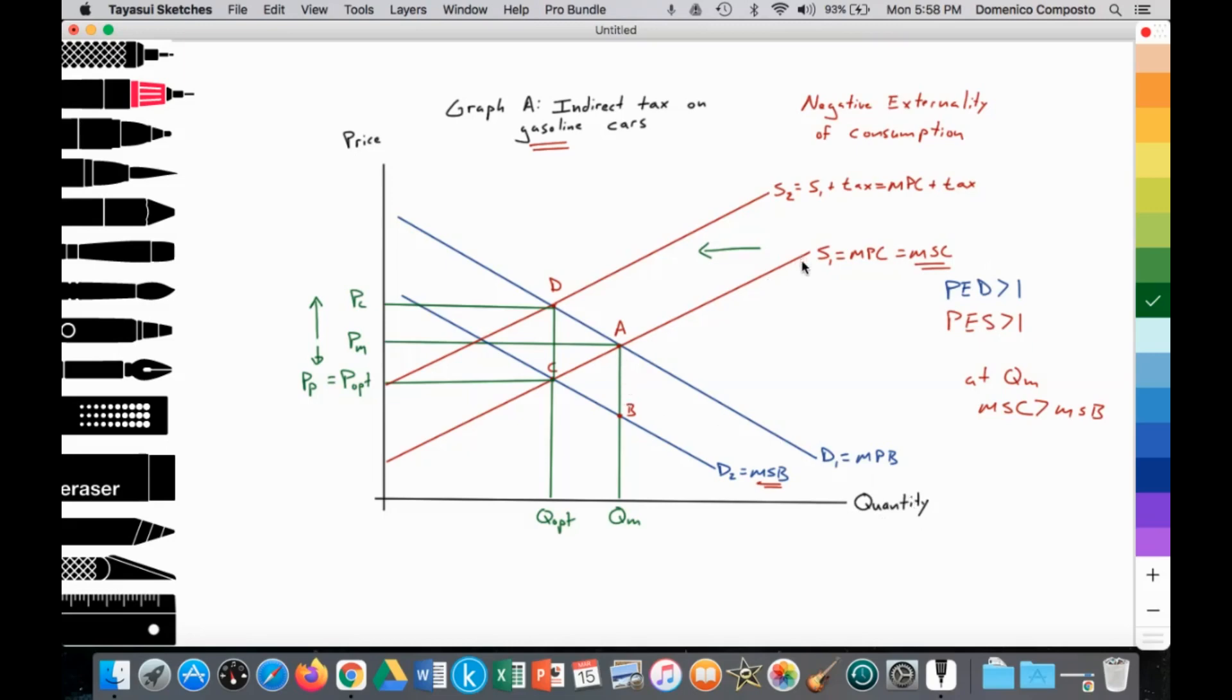We have two upward sloping supply curves in accordance to law of supply, S1 and S2. S1 is equal to the marginal private costs, which is equal to the marginal social costs, because we're assuming that in the production of gasoline cars, there's no externality.